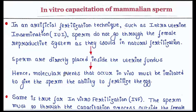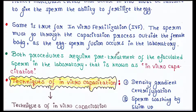In vitro means outside the body. During various types of artificial fertilization techniques, in vitro capacitation is performed in the laboratory. In techniques such as intrauterine insemination (IUI), sperm do not go through the female reproductive system as in natural fertilization — sperm are directly placed inside the uterine fundus. Hence, molecular events of capacitation that occur in vivo must be imitated to give the sperm the ability to fertilize the egg.